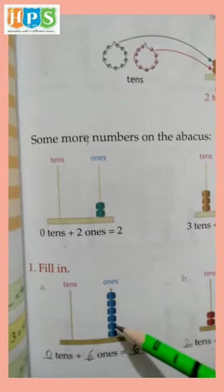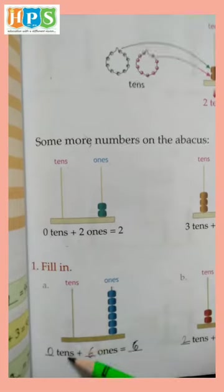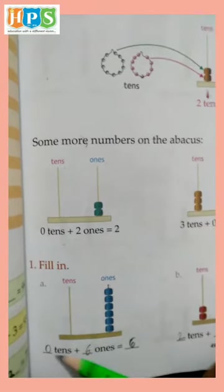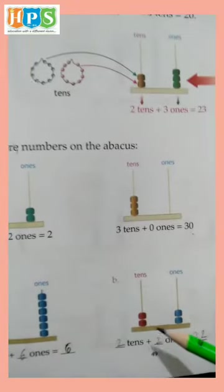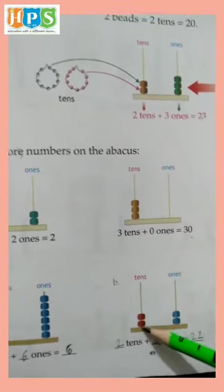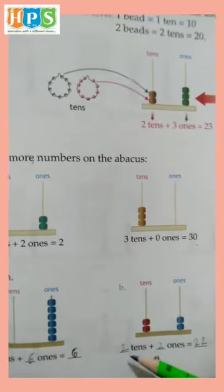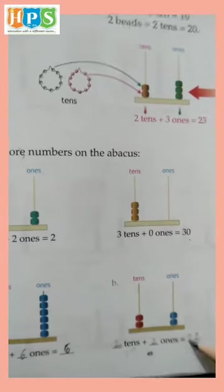One, two, three, four, five, six - six ones and zero tens, so zero and six equals six. Two ones and two tens - two tens means twenty. Twenty plus two equals twenty-two.